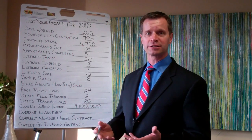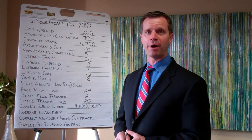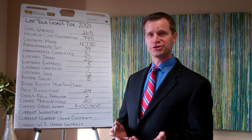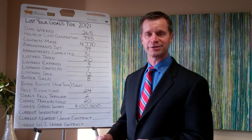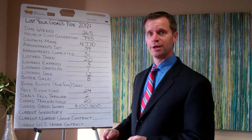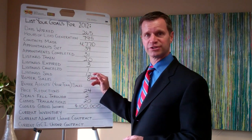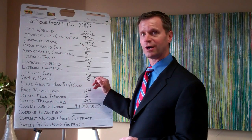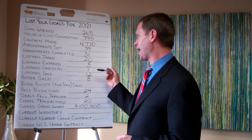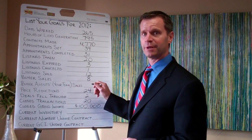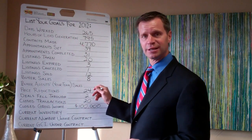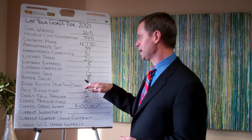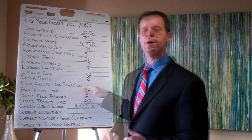Looking at what Gary Keller talks about in the MREA model, he says that 60% of your listings you should sell, and 40% will be buyer-side sales. So 60% gives us 12 listings that we're going to sell in 2012, and then obviously you're going to have 8 buyer sales. If you have a team, you'll have bigger numbers and you'll add that in with your buyer's agents.